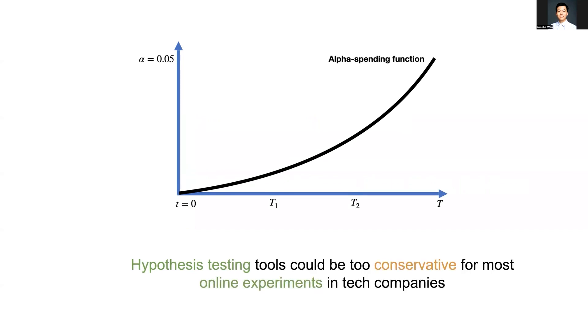However, they tend to be too conservative for online experiments. Instead, you can consider a reward maximization approach by evaluating several factors.